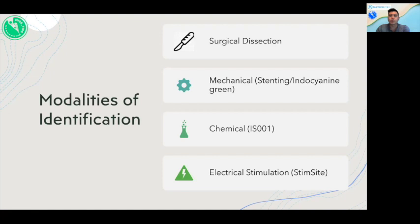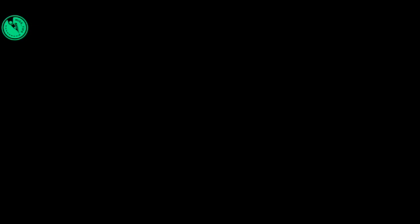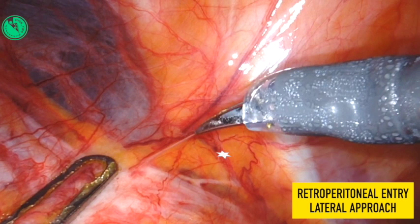Next, we'll go over modalities of techniques to identify the ureter. This includes surgical dissection, mechanical identification including stenting with and without indocyanine green, chemical using IS001, and the newest method, electrical stimulation with StemSight. These next two videos will show a surgical dissection of the lateral and medial approach respectively for the identification of the ureter. Grasping the gonadal vessels and pulling immediately exposes an avascular triangle that allows for retroperitoneal entry.